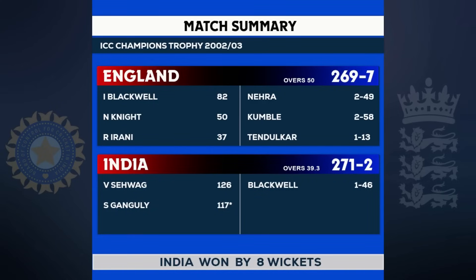Summary of the match: England 269 for 7, India 271 for 2.